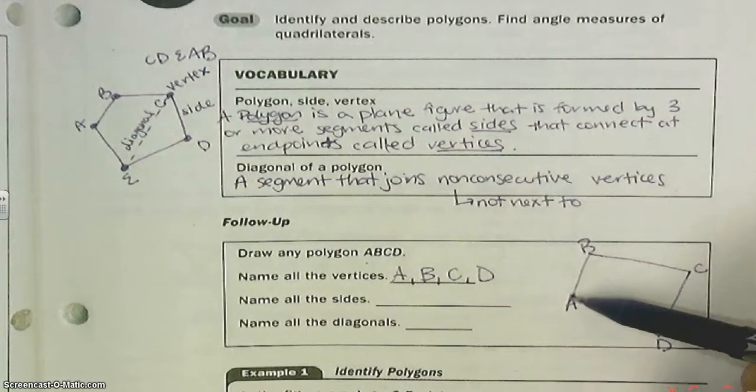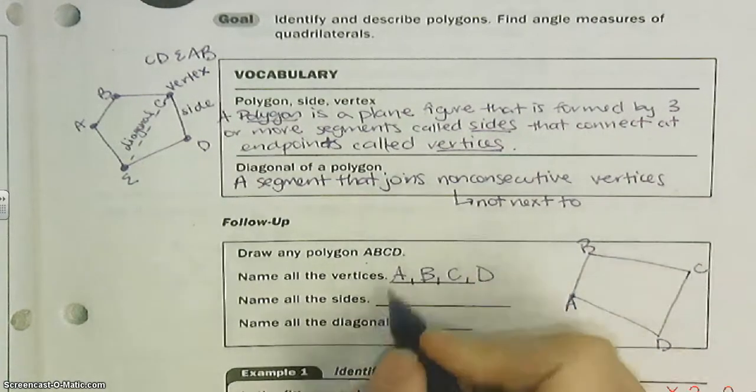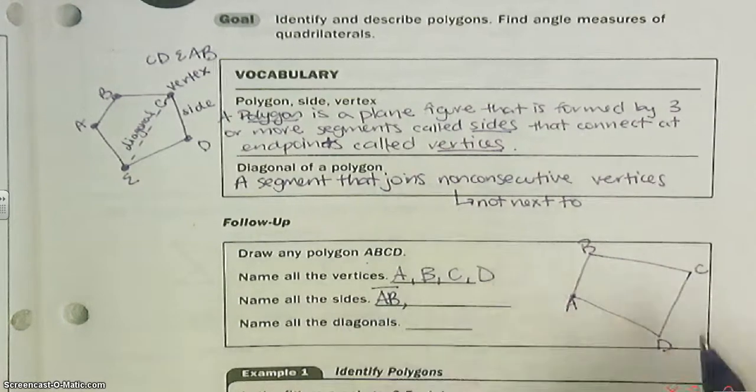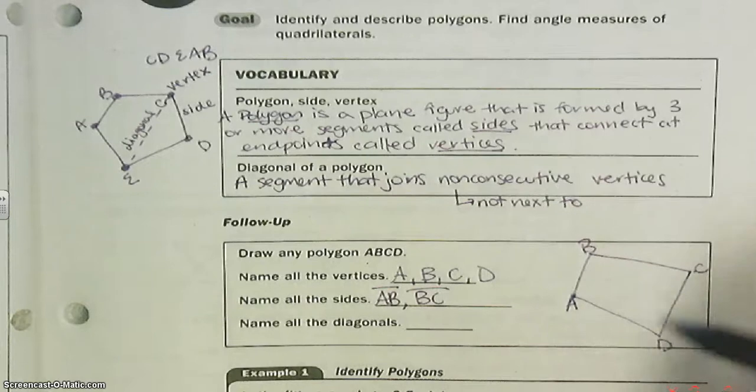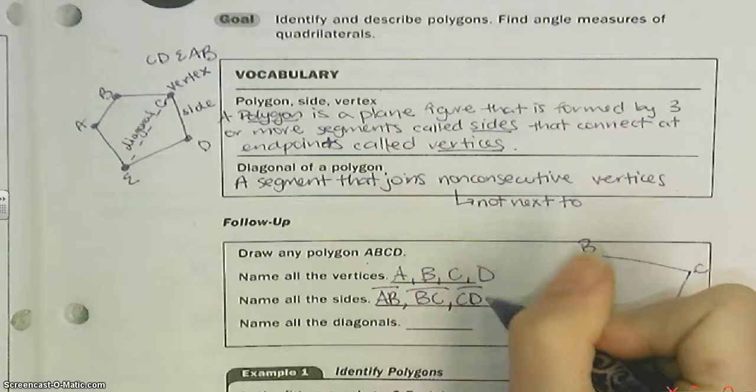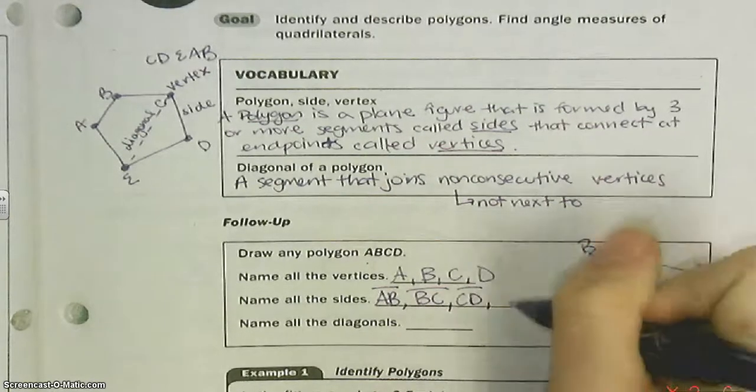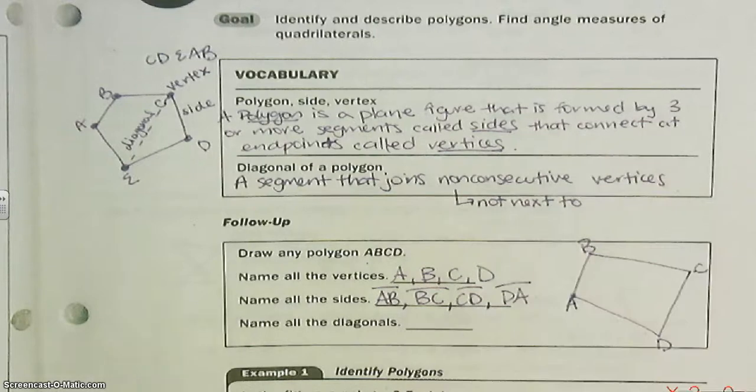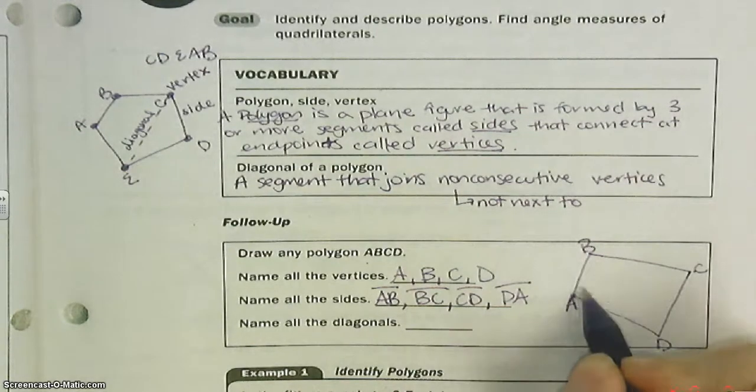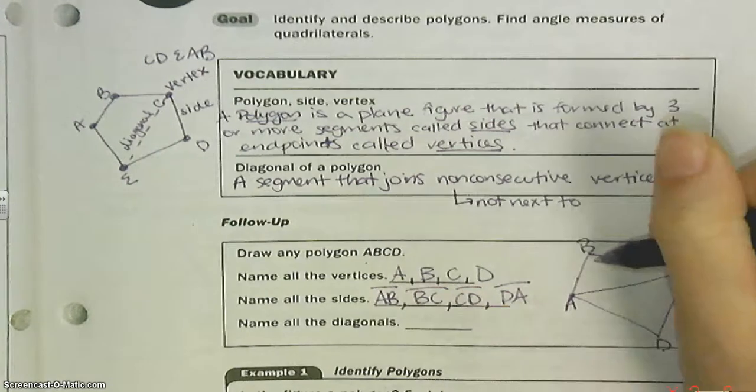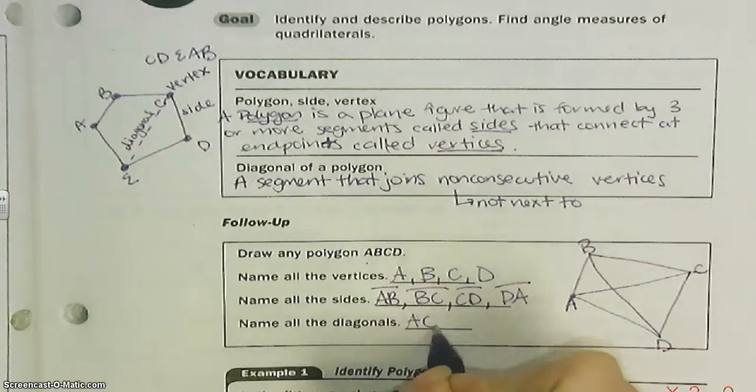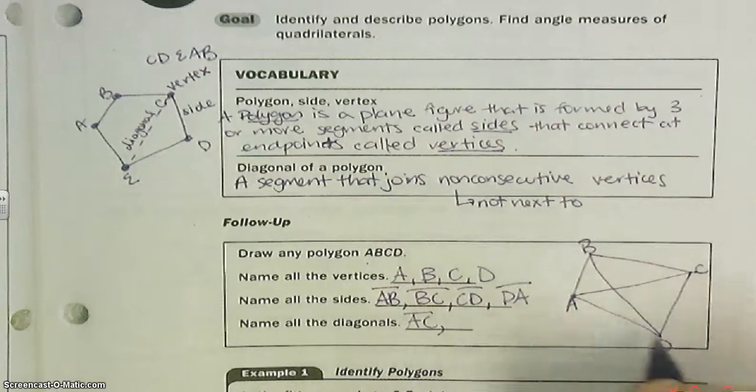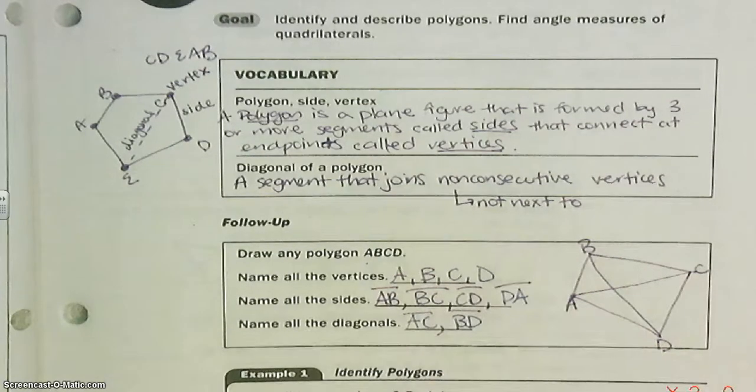Name the sides. Well, this is a side: AB, DC is a side, CD is a side, and DA is a side. Name all the diagonals. Let's draw all the diagonals. We've got to connect the vertices that are not next to each other. So AC is one diagonal, and BD is one diagonal.